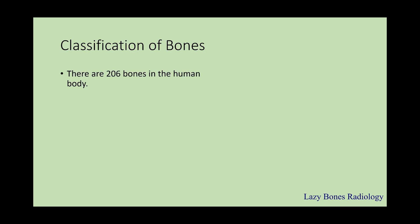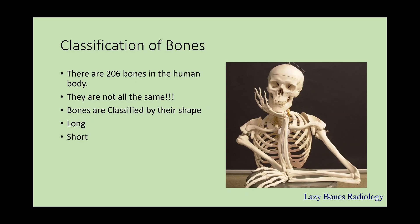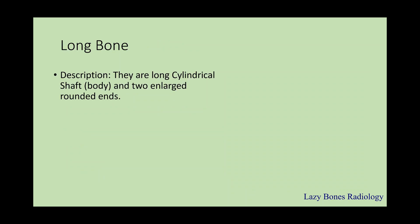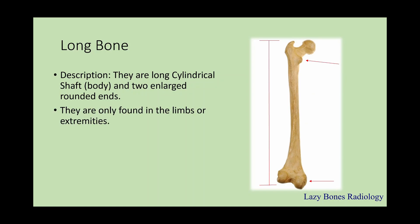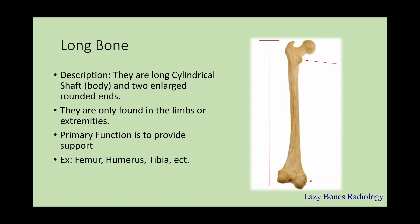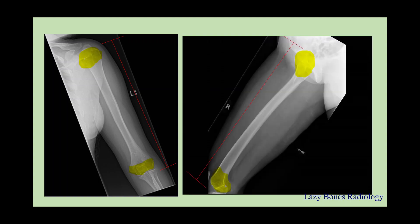Classifications of bones. There are 206 bones in the human body but they are not all the same. Bones are classified by their shape — for example, long bones, short bones, flat bones, irregular, and sesamoid. Long bones are long cylindrical shafts with two enlarged rounded ends, only found on the limbs or extremities, and their primary function is to provide support. As you can see, this is an example of the femur — a long bone with two rounded ends. Examples include the femur, humerus, and tibia.